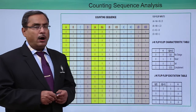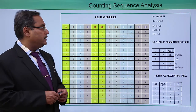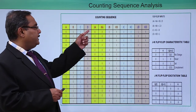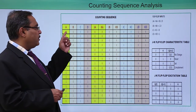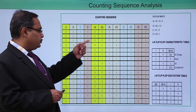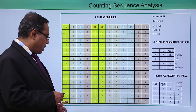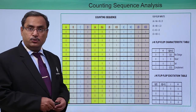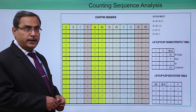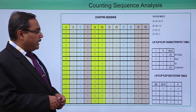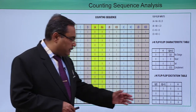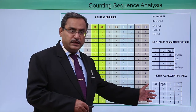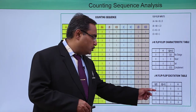Here is the respective counting sequence. We are having A, B, C, D ranging from 0000 to 1111, that is 0 to 15. We are also having the excitation table of the JK flip-flop.